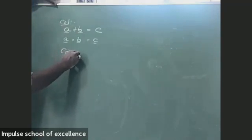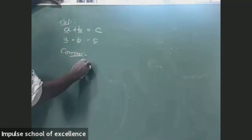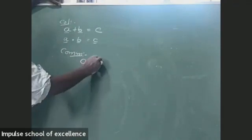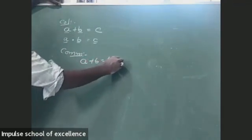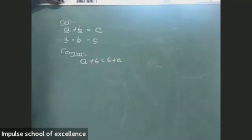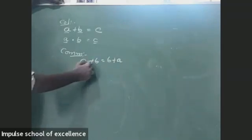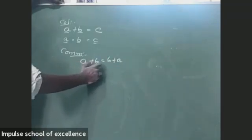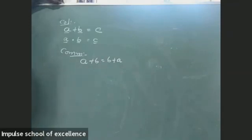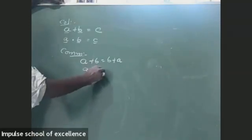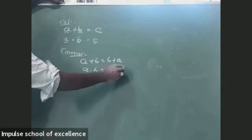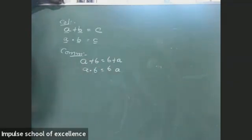After that, we have commutative property. What is commutative property? The commutative property is nothing but A + B = B + A. Here A and B are real numbers.